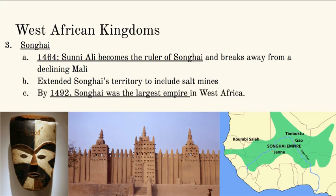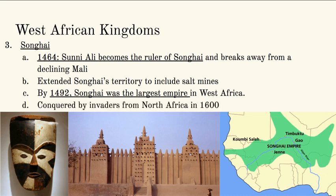By 1492, Songhai is going to become the largest empire in Western Africa. Mali is gone, Ghana is gone, but Songhai is really the reigning force in the late 1400s. By 1600, they're going to fall apart when invaders from Northern Africa come in and take over.